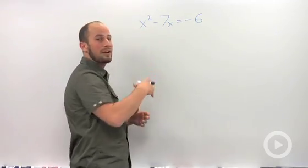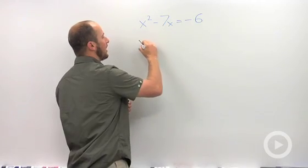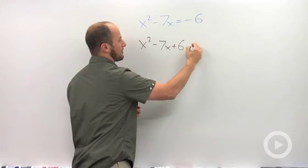In general, we're used to having our largest term have a positive coefficient. So in this case, I want to bring the negative 6 around, and we end up with x² - 7x + 6 = 0.